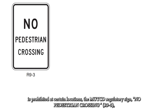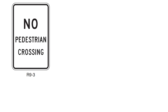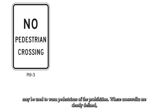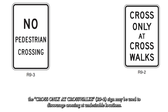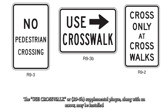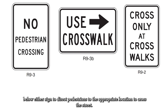If pedestrian crossing is prohibited at certain locations, the MUTCD regulatory sign No Pedestrian Crossing, R9-3, may be used to warn pedestrians of the prohibition. Where crosswalks are clearly defined, the Cross Only at Crosswalks, or R9-2 sign, may be used to discourage crossing at undesirable locations. The Use Crosswalk, or R9-3b supplemental plaque, along with an arrow, may be installed below either sign to direct pedestrians to the appropriate location to cross the street.